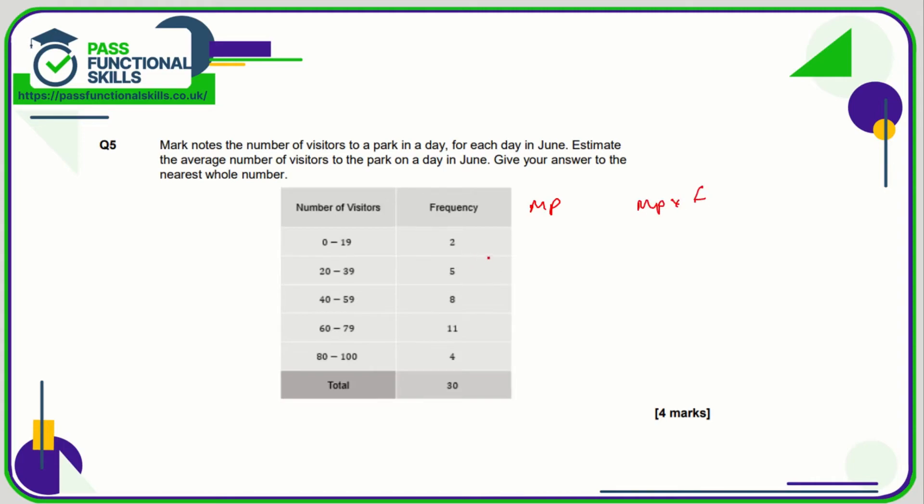Again, question five. I'm going to do a midpoint column and a midpoint times frequency. Midpoint of 0 to 19 is 9.5, then it's 29.5, 49.5, 69.5, and then 90. Midpoint times by frequency, we're just multiplying these two columns together, and we're going to get 19, 147.5, 396, 764.5, and finally 4 times 90 which is 360.